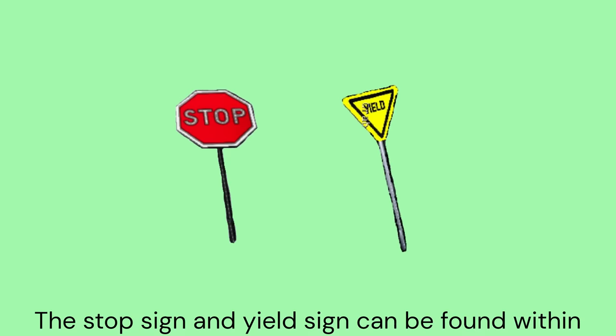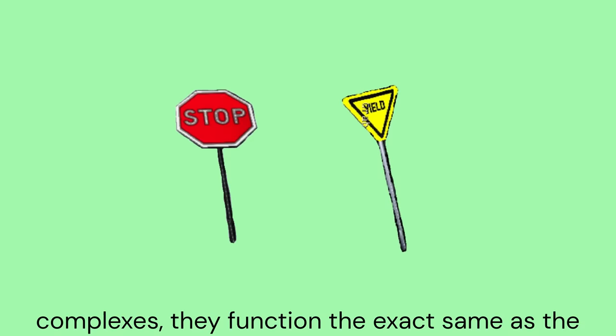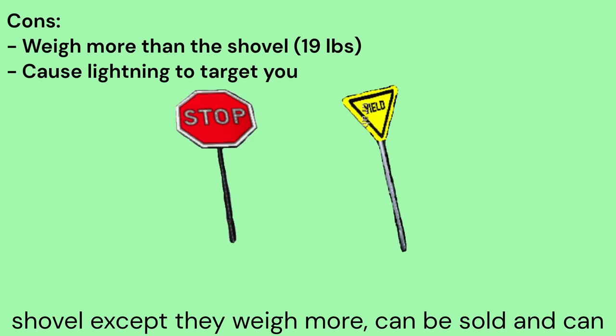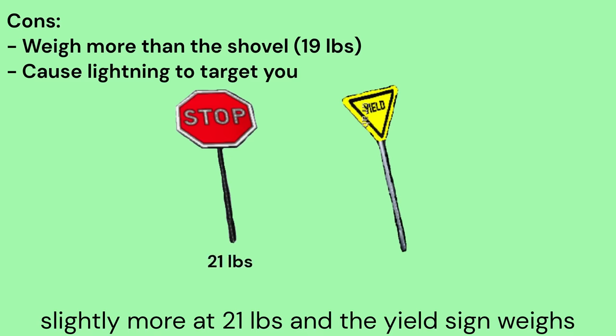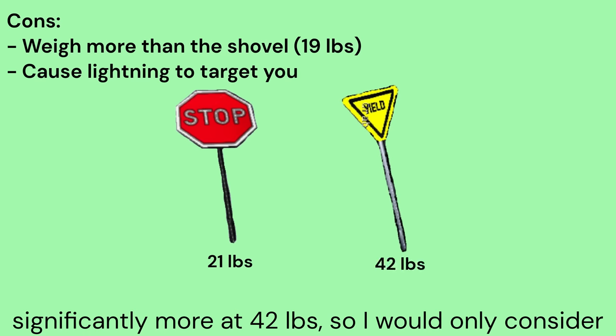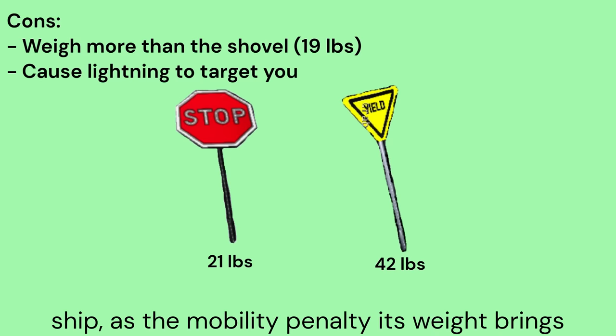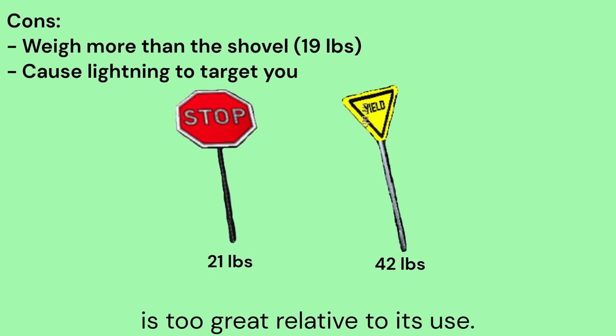The stop sign and yield sign can be found within complexes. They function the exact same as the shovel except they weigh more, can be sold, and can cause lightning to target you. The stop sign weighs slightly more at 21 pounds, and the yield sign weighs significantly more at 42 pounds, so I would only consider it a substitute for the shovel before you bring it to the ship.